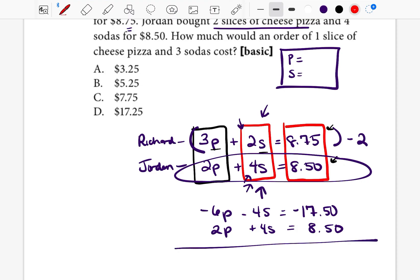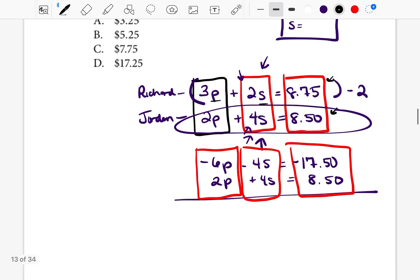We're going to go ahead and combine them now. We're going to combine the P's, we're going to combine the S's, and we're going to combine these numbers at the end, and hopefully the S's will disappear. So negative 6P plus 2P is equal to negative 4P. Negative 4S plus 4S, they cancel each other out and you no longer have anything. And negative 1750 plus 850 is equal to negative 9.